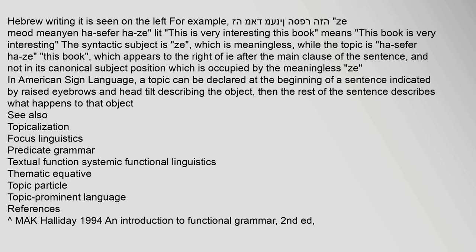In American Sign Language, a topic can be declared at the beginning of a sentence, indicated by raised eyebrows and a head tilt describing the object, and then the rest of the sentence describes what happens to that object.